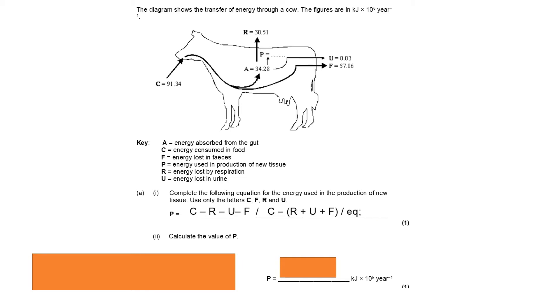So we could do either of those to get the answer here. So P equals C, the energy consumed, minus losses to respiration, minus losses to urine production and minus losses of feces production. Or P, energy used in production of new tissue, equals energy consumed minus those three added together, losses due to respiration and urine and feces production. Either of those is absolutely fine.